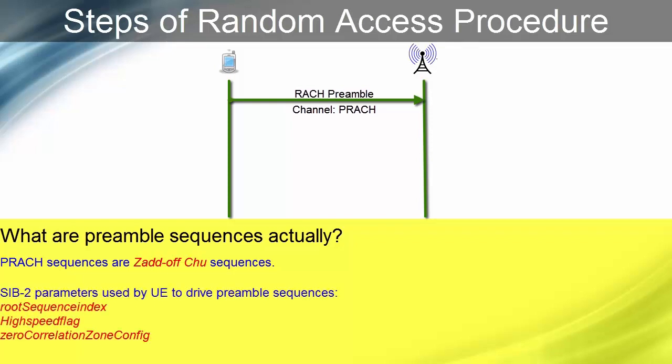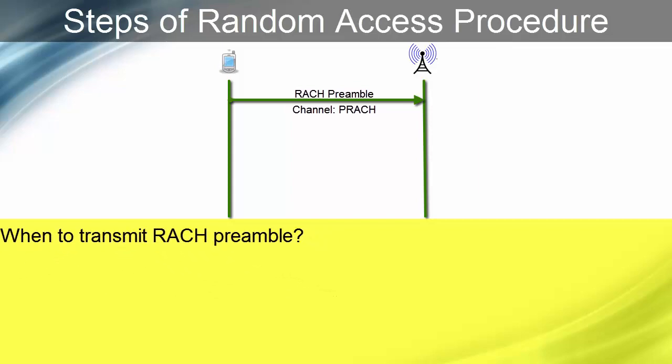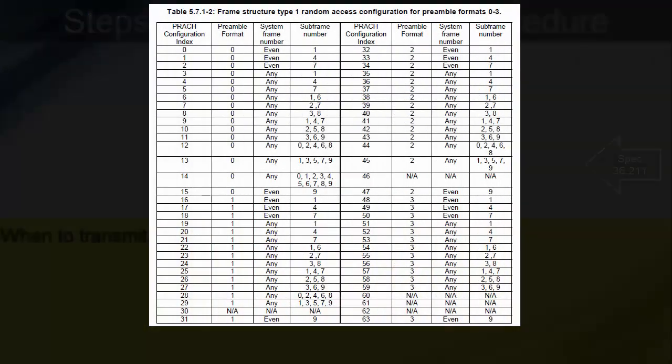SIB2 parameters root sequence index, high speed flag, and zero correlation zone config are used by UE in the algorithm for deriving preamble sequences. Here is the table that tells us the format and timing of the preamble. SIB2 parameter PRACH config index is mapped to the PRACH configuration index column of this table. So, by reading this SIB2 parameter, UE comes to know about the preamble format and timing.